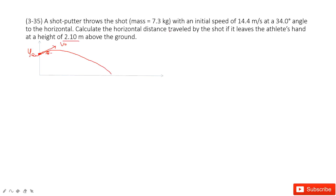We need to find the horizontal distance traveled by the shot, which is the x-displacement. We know the initial velocity and the angle, so we project the initial velocity into x-component and y-component. Vox is V0 times cos theta, and Voy is V0 times sin theta.